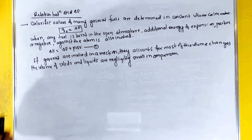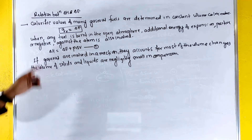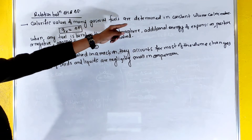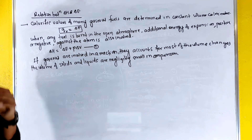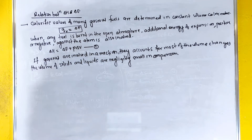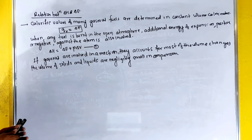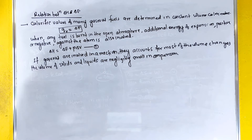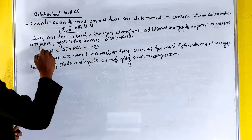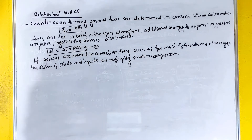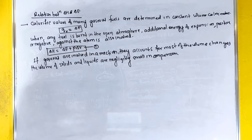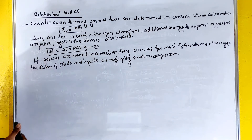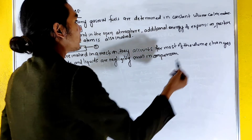The calorific value of many fuels is determined in a constant volume calorimeter. When fuel is burned in the open atmosphere, additional energy of expansion — positive or negative — against the atmosphere is involved. So delta H equals delta E plus P delta V.